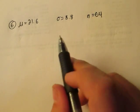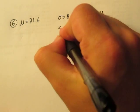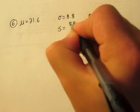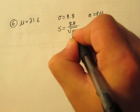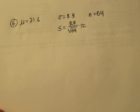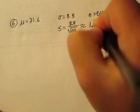Let's first find our sample standard deviation. So we take the population standard deviation, divide by the square root of our sample size, and looks like we get 1.1.